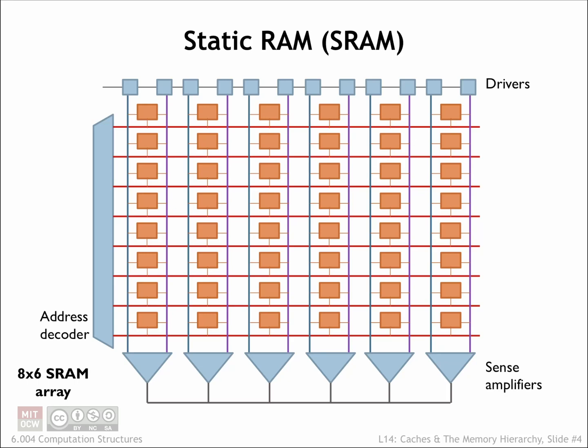SRAMs are organized as an array of memory locations, where a memory access is either reading or writing all the bits in a single location. Here we see the component layout for an 8-location SRAM array, where each location holds 6 bits of data.